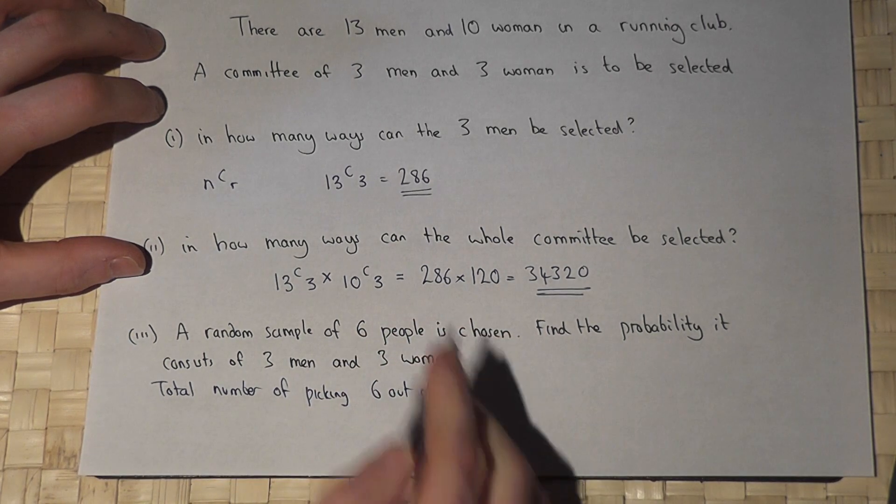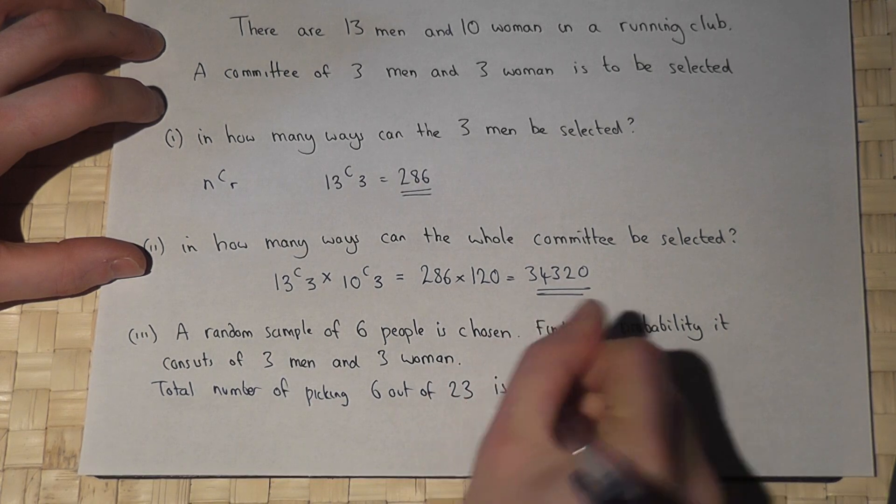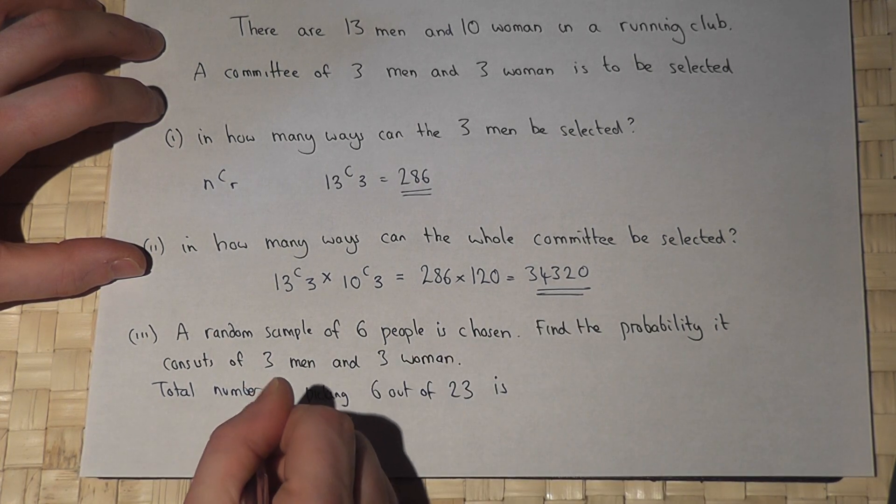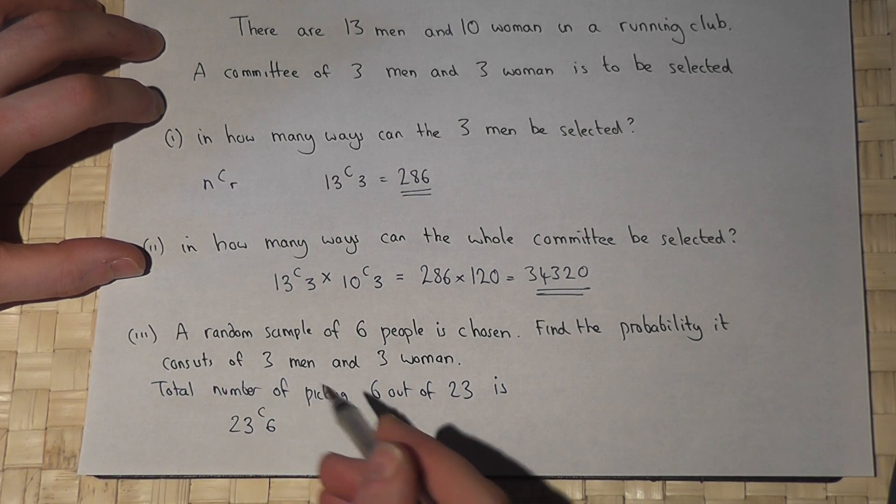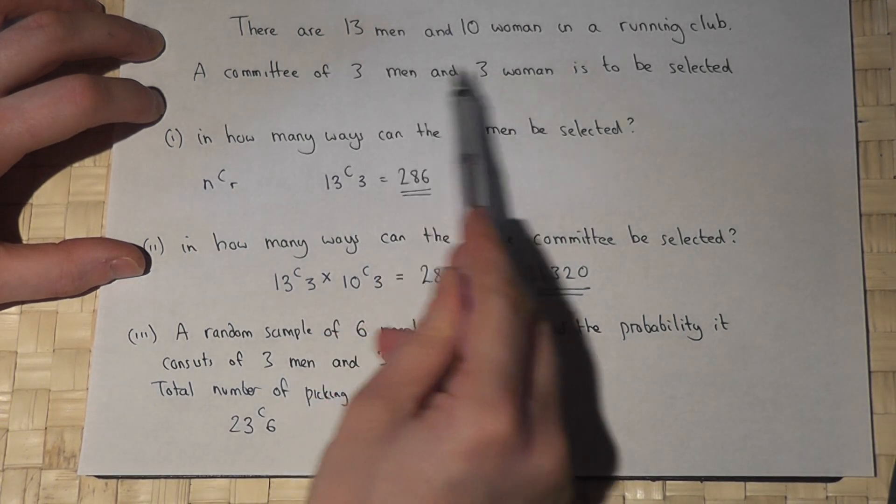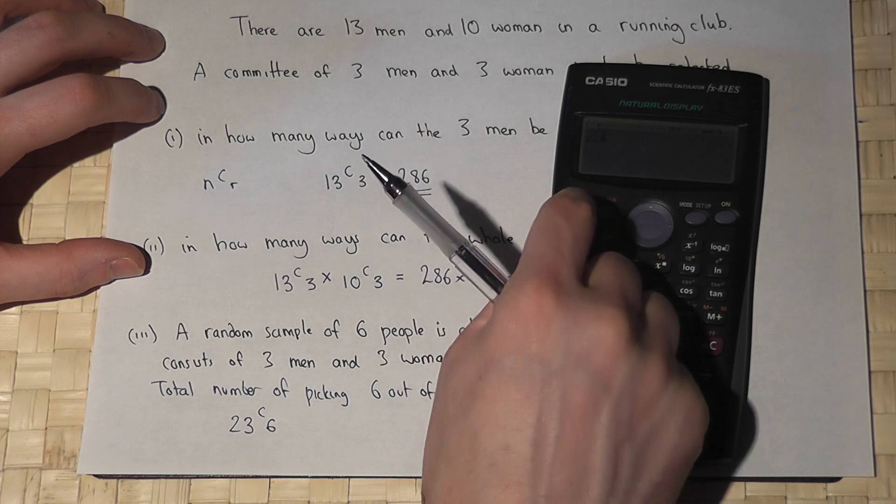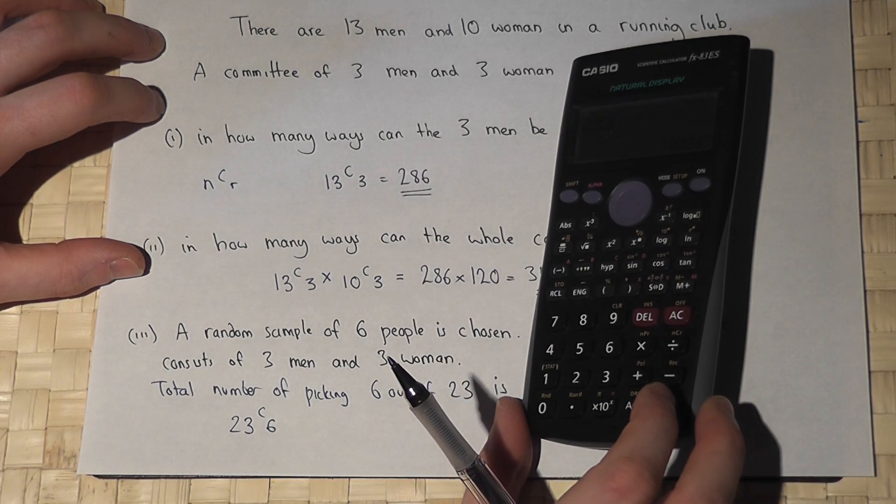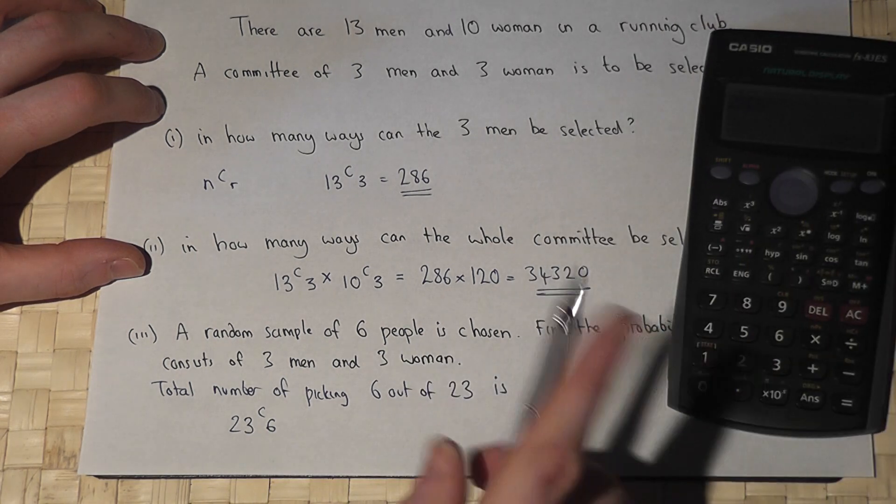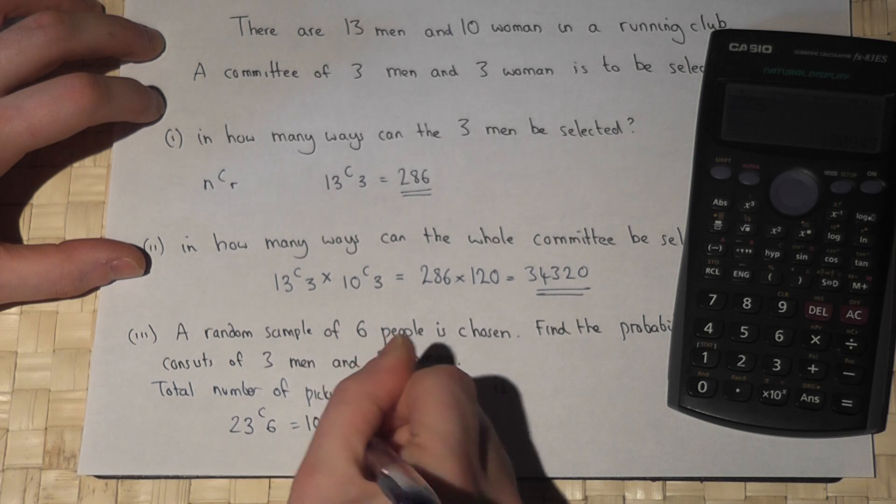...out of 23 is 23C6. So 23C6 finds the total number of ways of picking a committee of six, ignoring the condition. That works out at 23, shift, 6, which is 100,947.